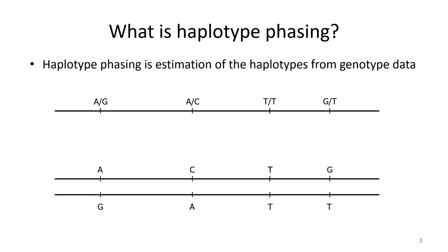For example, you might estimate that the sequences are shown on the bottom two lines of the slide. If you look at each site, you can see you still have the same pairs of alleles — you haven't lost any information. Like at the first site, the two lines at the bottom have an A and G, matching the genotype on the top. But now they're resolved into two sequences, one inherited from the mother and the other from the father.